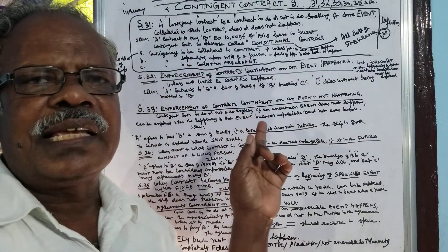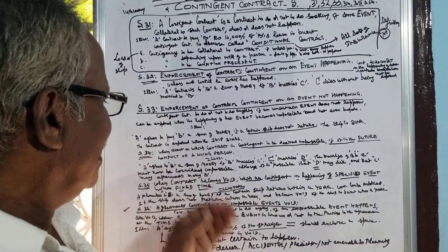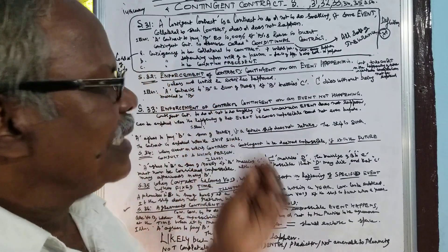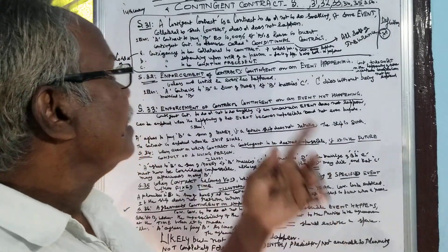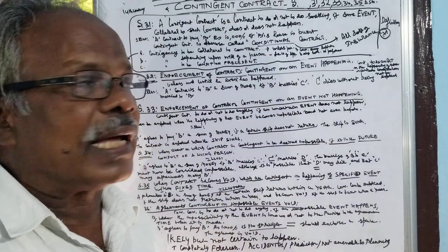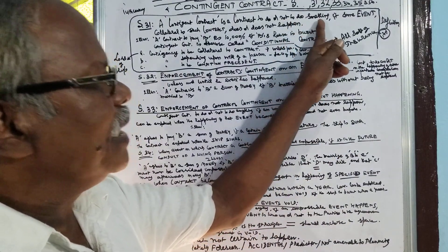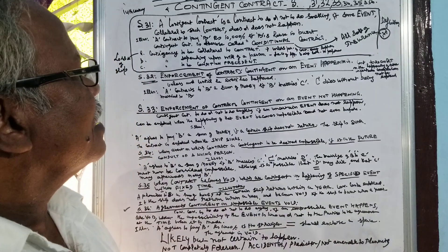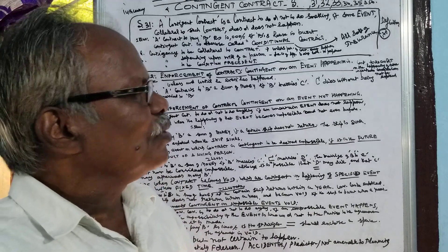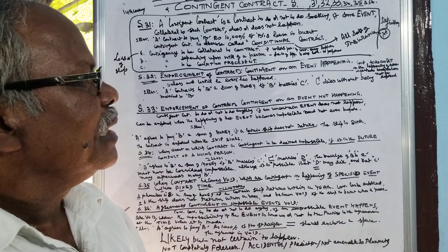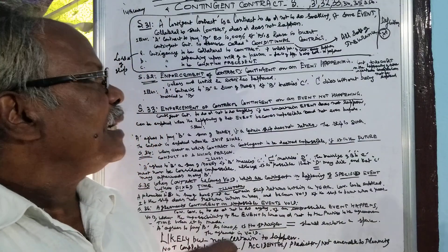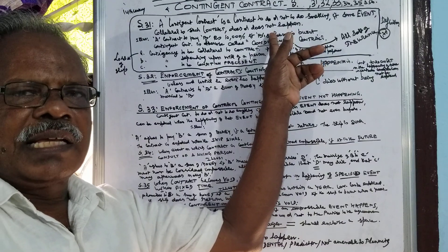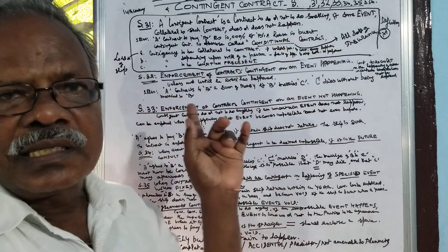Section 31 defines the contingent contract. The definition states: a contingent contract is a contract to do or not to do an act, if some event collateral to such contract does or does not happen. That is, to do something or not to do something, if some event collateral to the contract does or does not happen — such a contract is called a contingent contract.